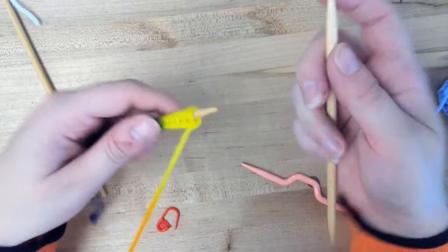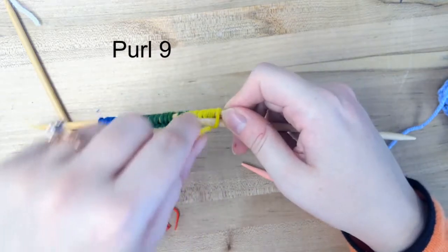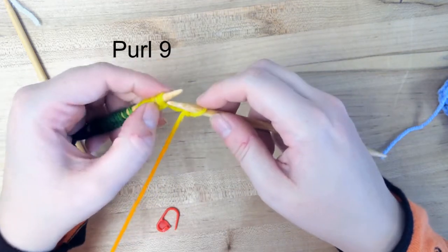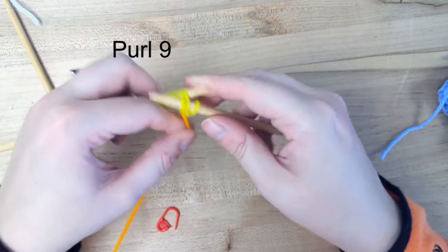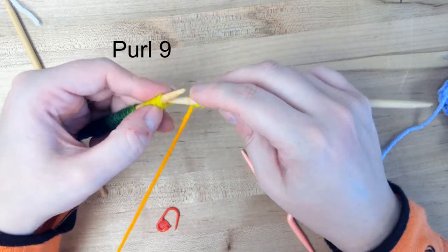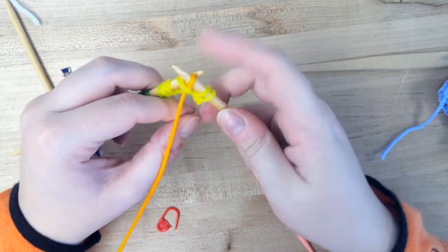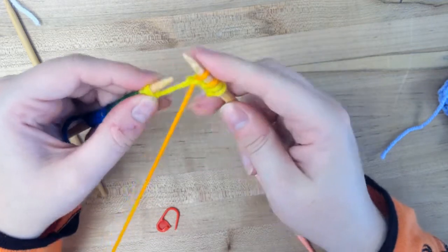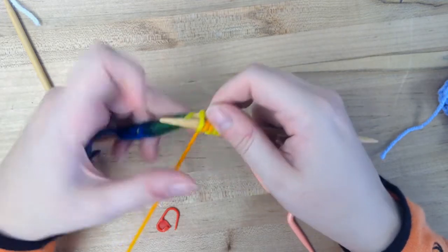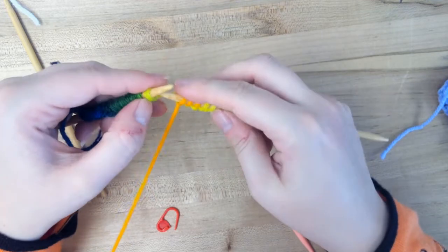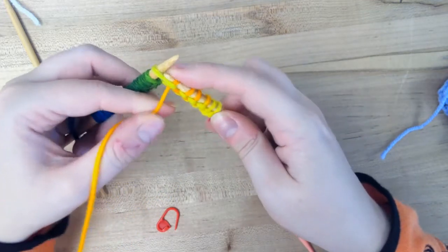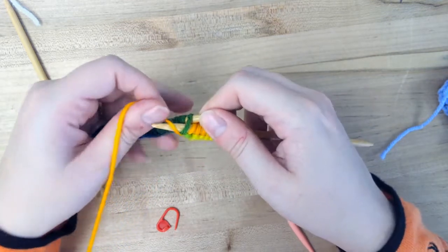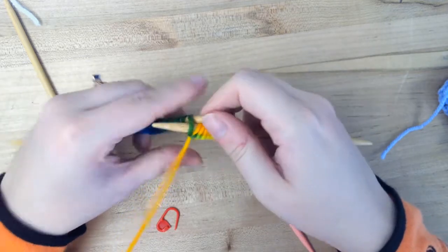So our first row, we're going to purl nine. And to purl, you just go from this front side, yarn over, pull it through, and then drop that loop off of the left needle. And we're going to do that nine times. Two, three, four, five, six, eight, and nine.